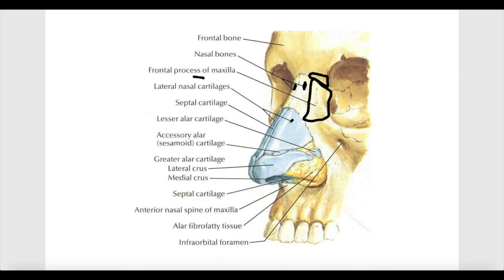The inferior part of the external nose is formed by cartilages. These include the septal cartilage, located exactly in the midline, and on each side of the septal cartilage are the two large lateral nasal cartilages. The outer part of the external nose is called the alar, and any cartilage helping to form it is referred to as an alar cartilage.